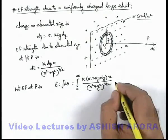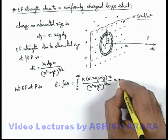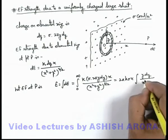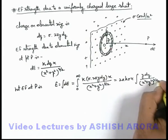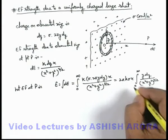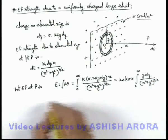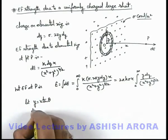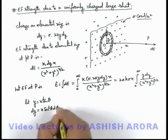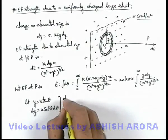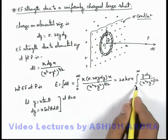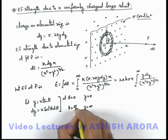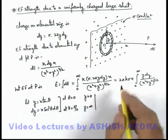Taking the constants out, this will be 2πkσx times the integration of y·dy divided by (x² + y²)^(3/2) from zero to infinity. Now we can apply a trigonometric substitution: let y = x·tan θ, which gives dy = x·sec²θ·dθ. At θ = 0, y is also zero, and y equals infinity when θ becomes π/2. So we can also change the limits of integration accordingly.